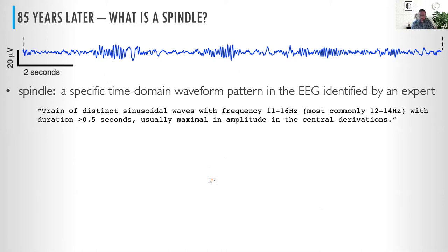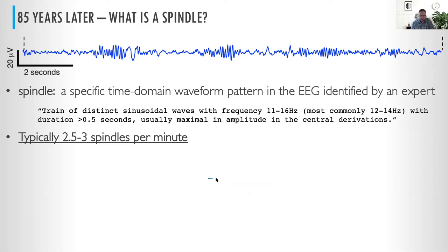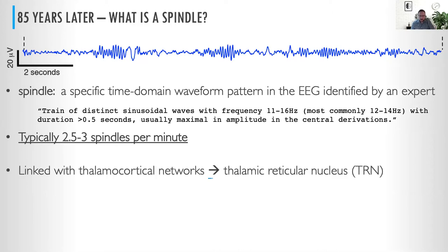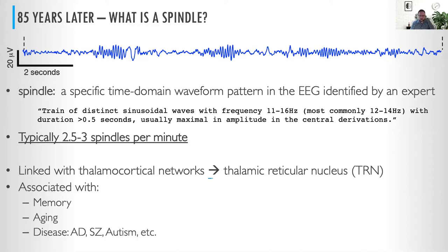We have now codified this a bit more in sleep scoring manuals. Essentially, we have this broad definition of this wiggly waveform — these appear at a rate of about 2.5 to 3 spindles per minute. Spindles have been especially interesting because of their linkage with certain thalamocortical networks, but also their association with important processes like memory consolidation, as well as changes during aging and disease. It's been a recent hot topic.